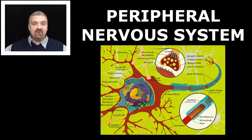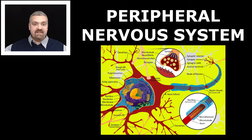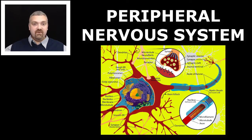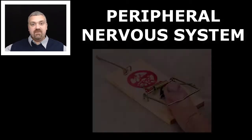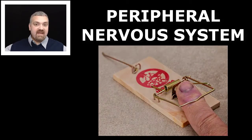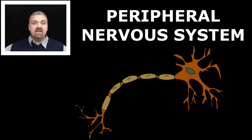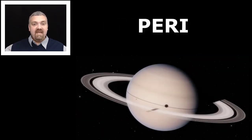The important one for here is the peripheral nervous system. Whereas the central nervous system is the brain and spinal cord at the center, your peripheral nervous system is everything around your brain and spinal cord — think sensory receptors, spinal nerves, motor nerves. So peri means all around.